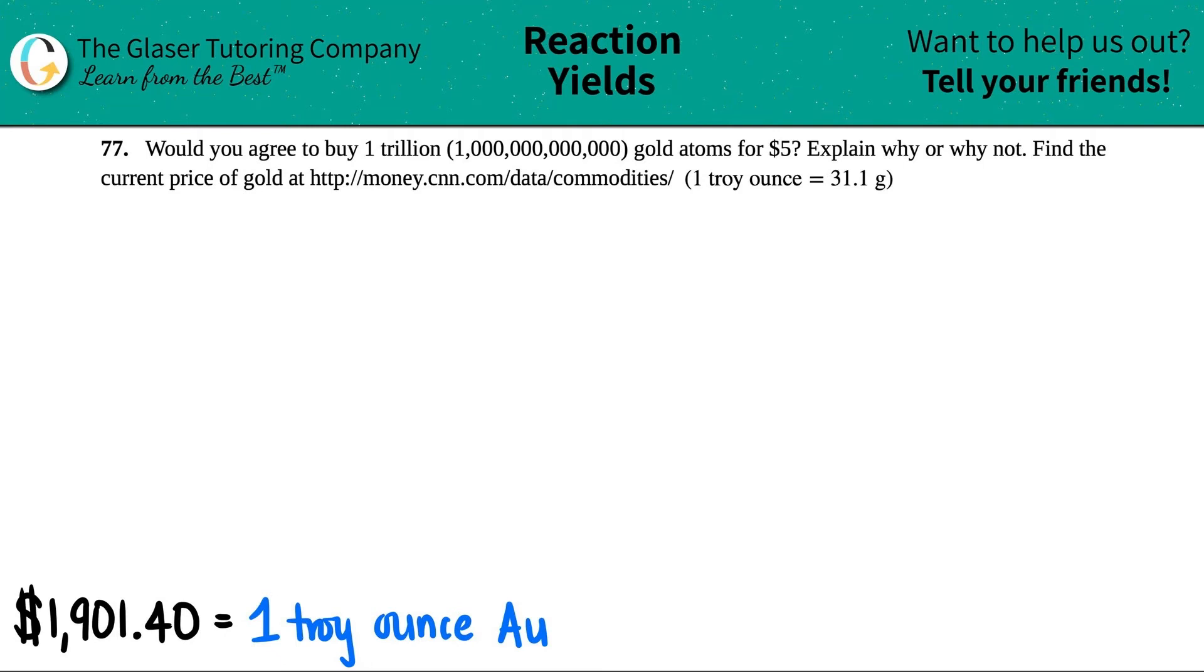Number 77. Would you agree to buy one trillion gold atoms for five dollars? Explain why or why not. Find the current price of gold at this web address, and they give us the conversion that one troy ounce equals 31.1 grams.